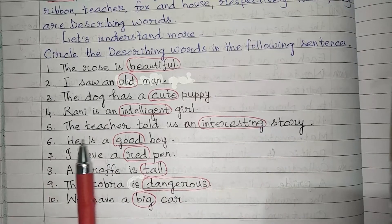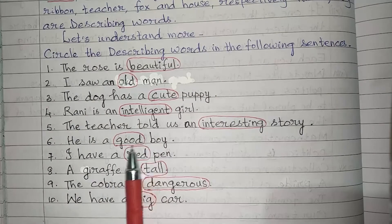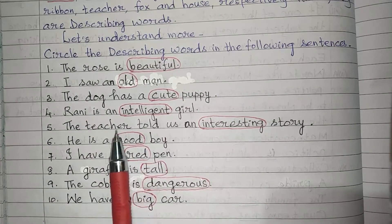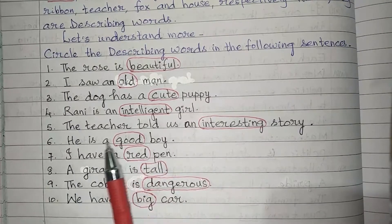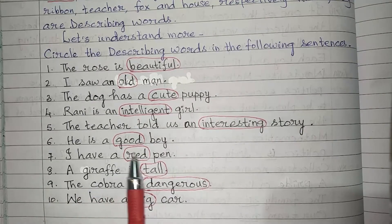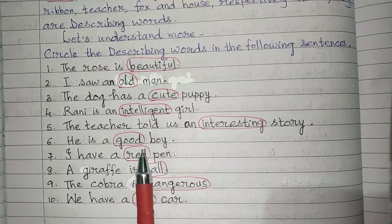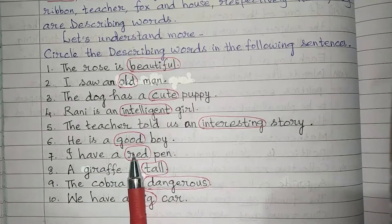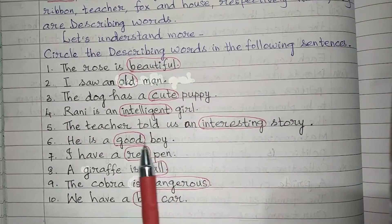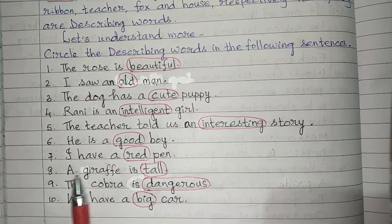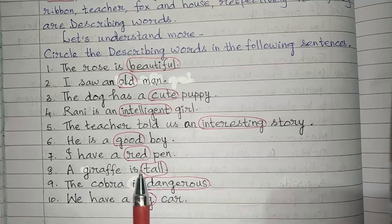Number six: He is a good boy. The word 'good' describes the boy — how is the boy? Good. So 'good' is a describing word. Number seven: I have a red pen. The word 'red' describes the pen — how is the pen? Red. Therefore 'red' is a describing word here. Number eight: A giraffe is tall. The word 'tall' describes the giraffe, so 'tall' is a describing word.